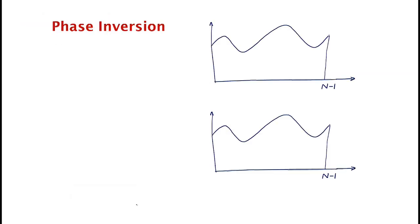There are two steps to the algorithm. The first is called phase inversion. The algorithm works in a number of iterations, and the number of iterations is going to be square root of n.